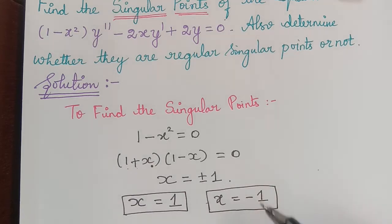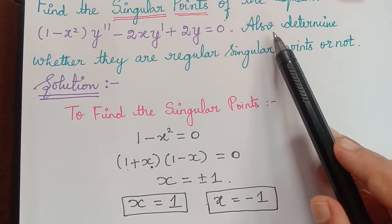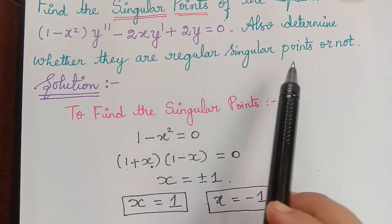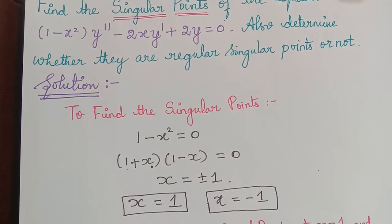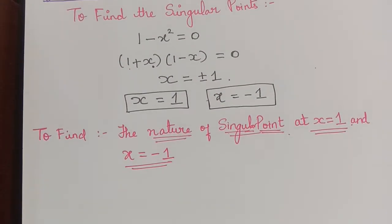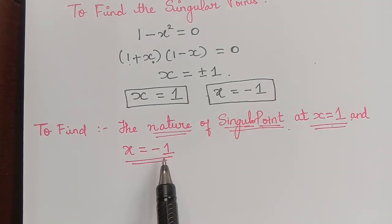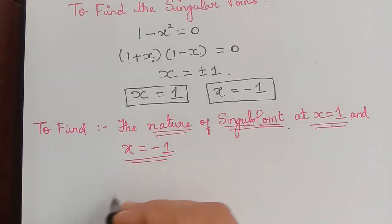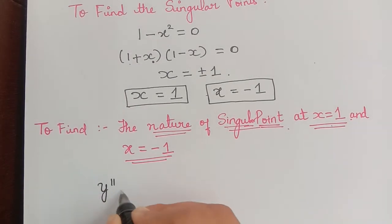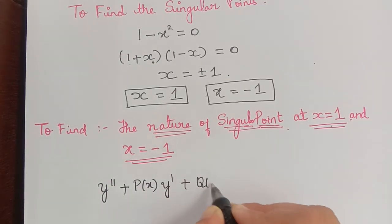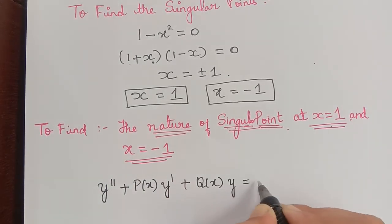Now, after finding the singular points, the second question asks us to determine whether they are regular singular points or not. In order to know this, we have to determine the nature of the singular points at x equal to 1 and at x equal to negative 1, for which we have to rewrite the given equation in the form y double dash plus P(x) y dash plus Q(x) y equal to 0.